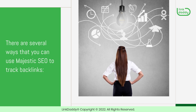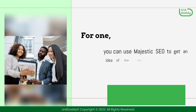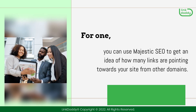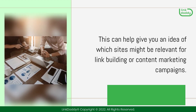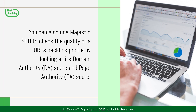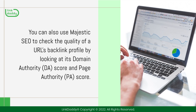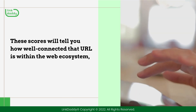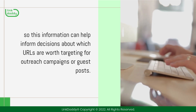There are several ways that you can use Majestic SEO to track backlinks. For one, you can use it to get an idea of how many links are pointing towards your site from other domains. This can help give you an idea of which sites might be relevant for link building or content marketing campaigns. You can also use Majestic SEO to check the quality of a URL's backlink profile by looking at its domain authority score and page authority score. These scores will tell you how well connected that URL is within the web ecosystem.